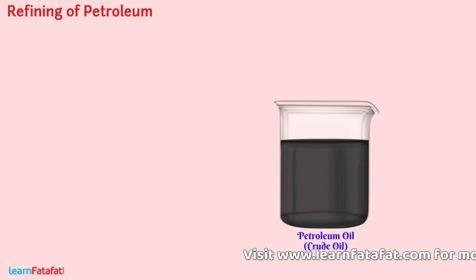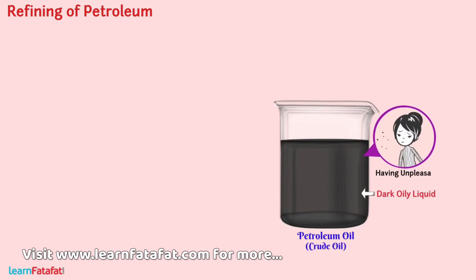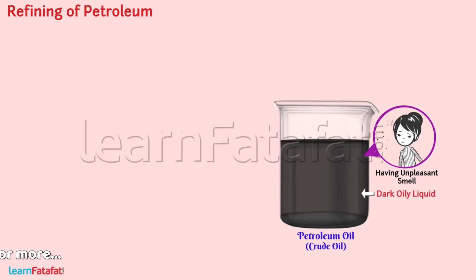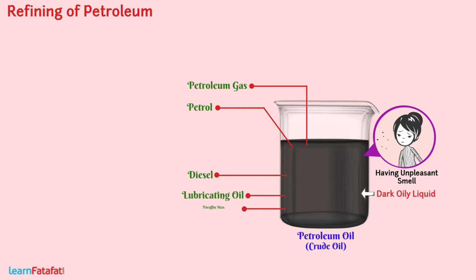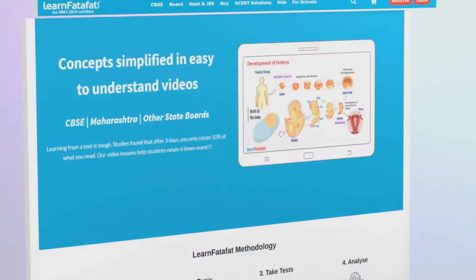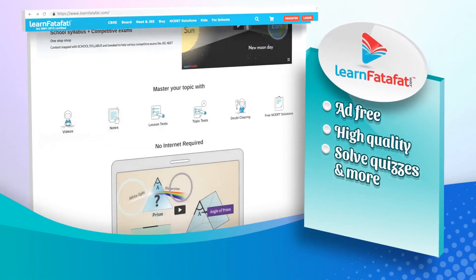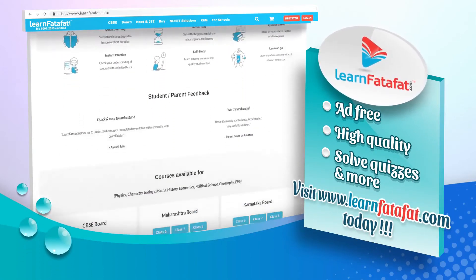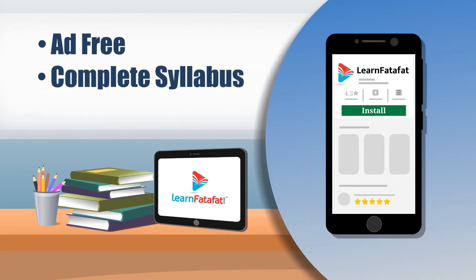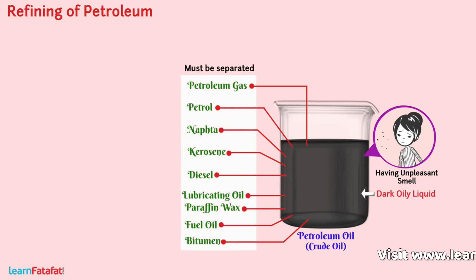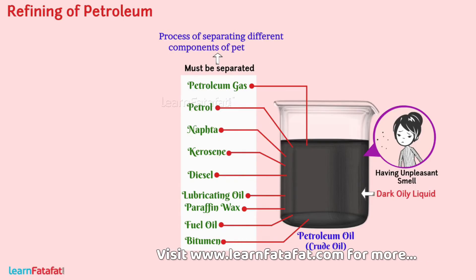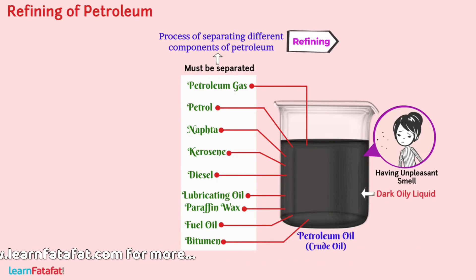Refining of petroleum. Petroleum oil or crude oil obtained is a dark oily liquid having an unpleasant smell. It consists of different constituents such as petrol, petroleum gas, diesel, lubricating oil, paraffin wax, etc. These components must be separated, and the process of separating different components of petroleum is called refining. It is carried out in a petroleum refinery.